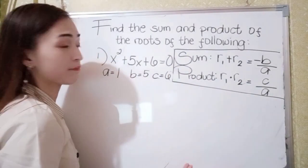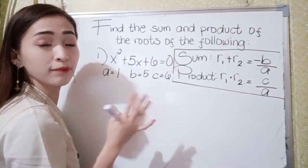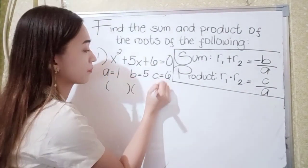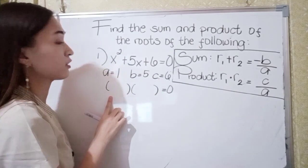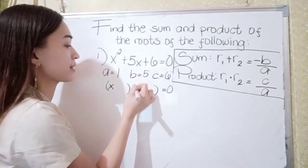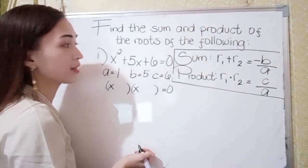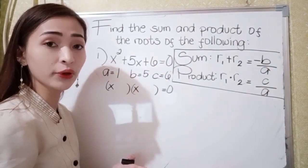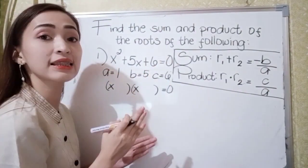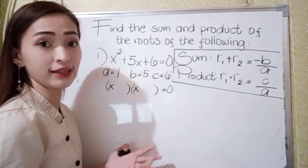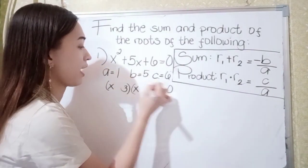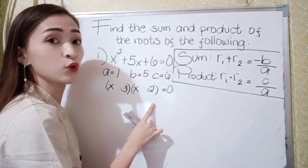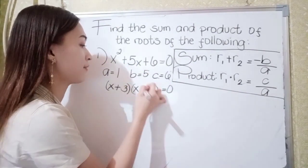The next step is to factor x squared plus 5x plus 6 equal to 0. The factors of x squared is x times x. For the factors of 6, think of two numbers that multiply to 6 and add to 5. So we have 3 and 2, because 3 times 2 is 6 and 3 plus 2 is 5. Both are positive.